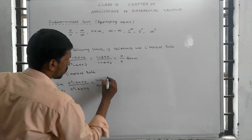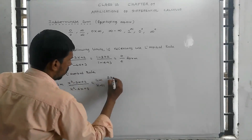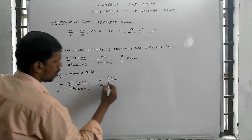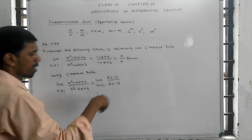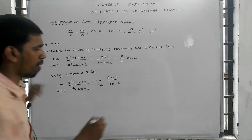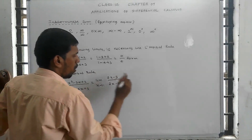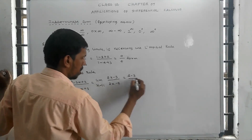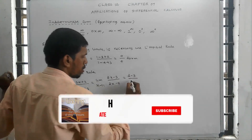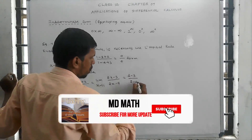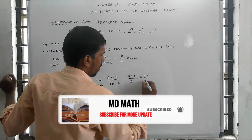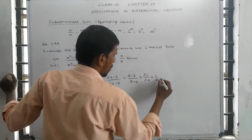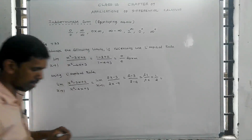Differentiating the numerator gives 2x minus 3, and differentiating the denominator gives 2x minus 4. Substituting x equals 1, the answer is equal to 1.